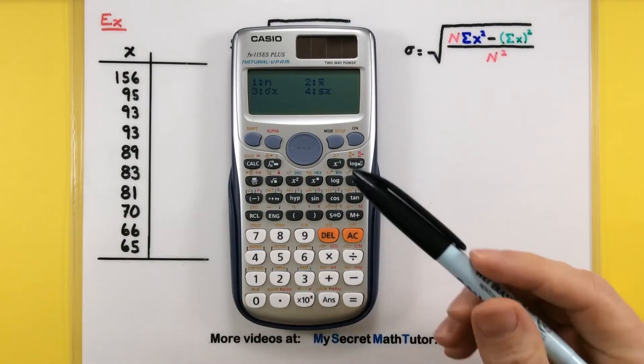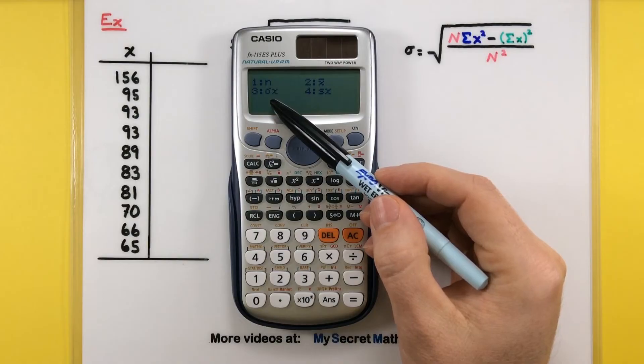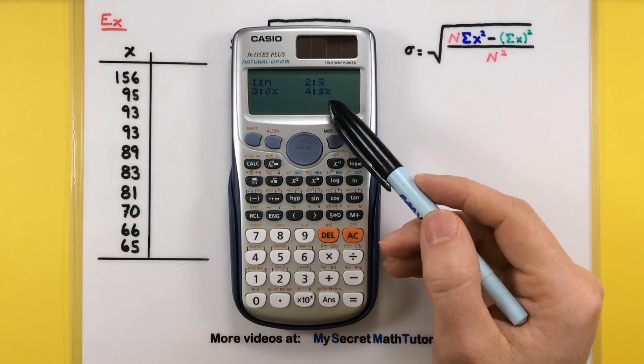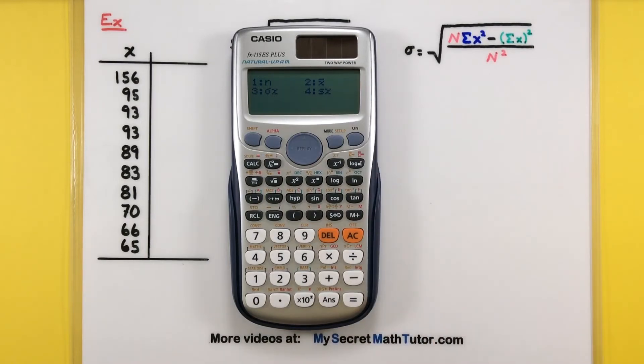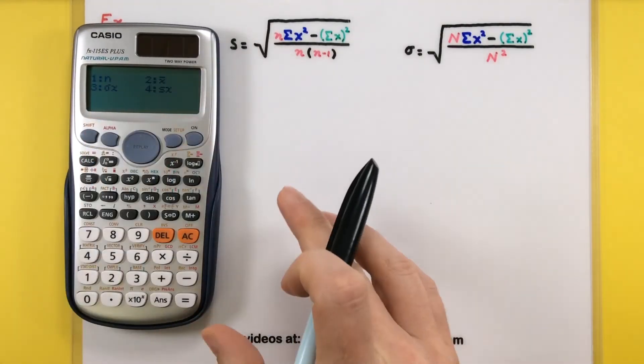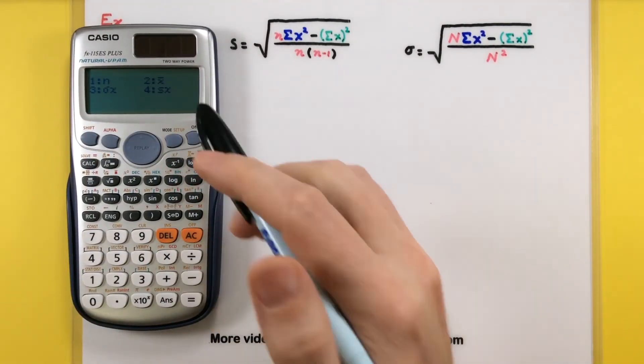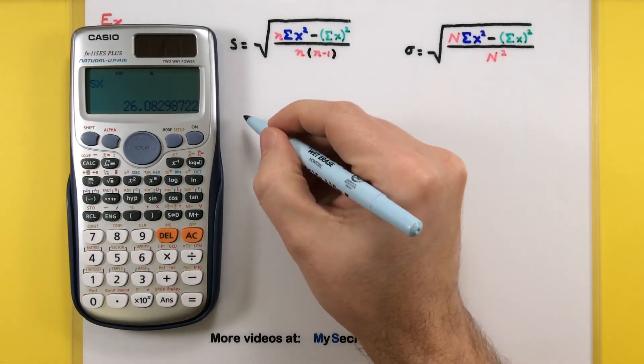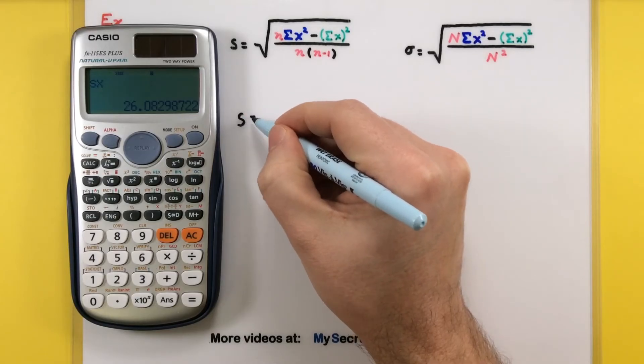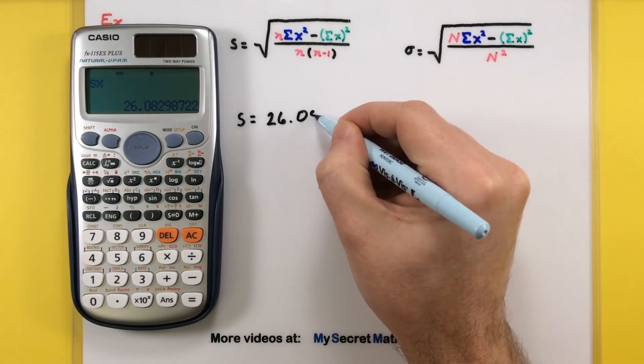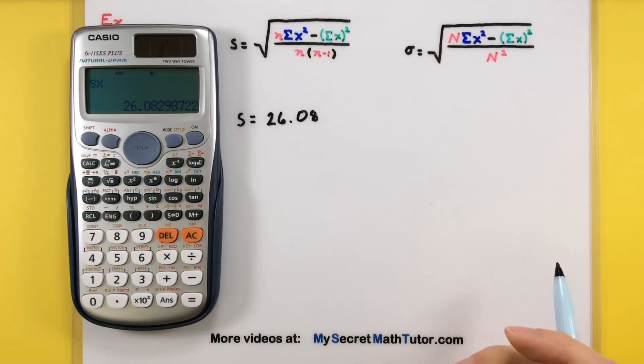And now we have lots of options. Number 3 would be for the population standard deviation. We can see that because it has a little sigma in there. And 4 would be for the sample standard deviation. You can see it has an S. So let's go ahead and do one of each of these. We'll do the sample as if this data came from a sample. So I just press number 4. I now have SX on the screen. Press equals. So this will give us that if this was from a sample, our standard deviation would be 26.08 and some change.